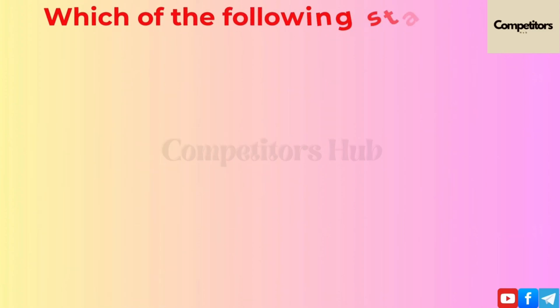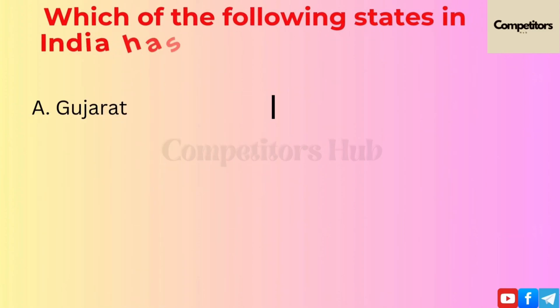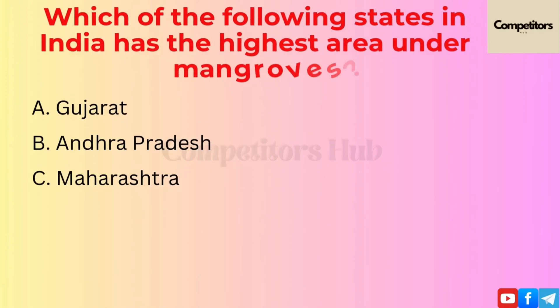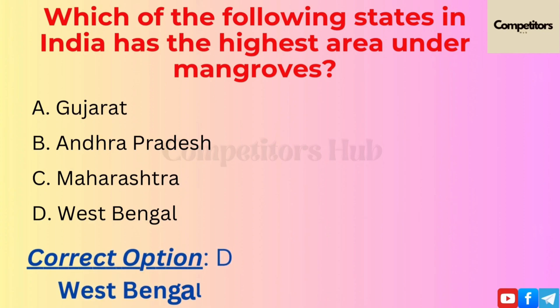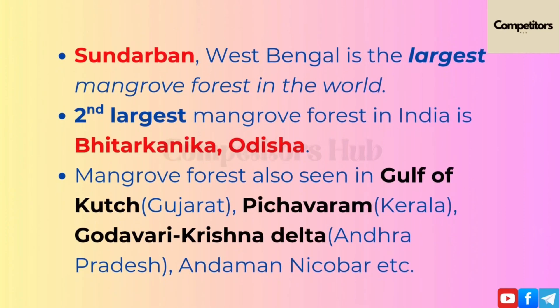The next question is: which of the following states in India has the highest area under mangroves? Option A: Gujarat. Option B: Andhra Pradesh. Option C: Maharashtra. Option D: West Bengal. The correct option is D, West Bengal.